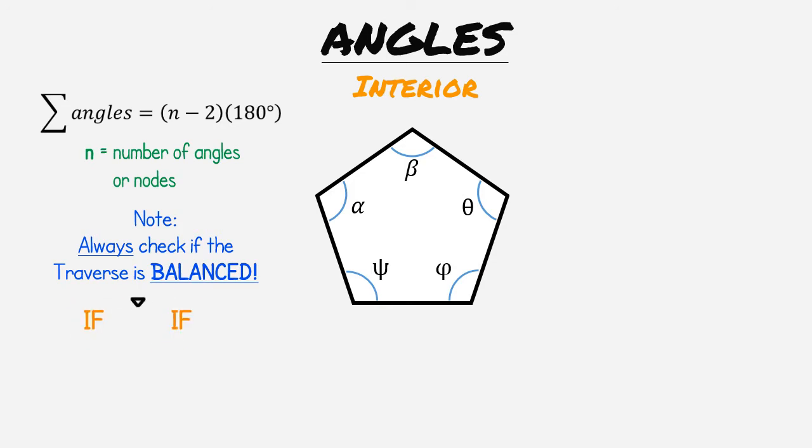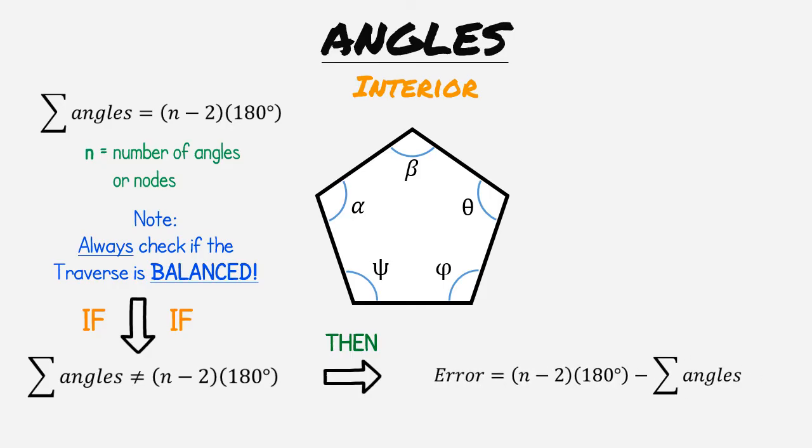If our first equation is not true then it is best to find the total error by using the following equation. If the result using this equation is positive then you need to add to the total degrees. If it's negative then subtract. The correction needed to either add or subtract to each angle is determined by dividing the total error by the number of nodes.